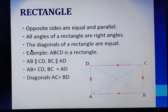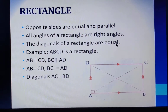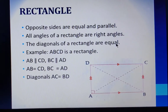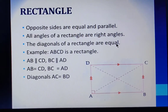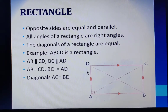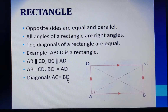The third property of rectangle says the diagonals of a rectangle are equal. We have learned that the lines joining the opposite vertices are the diagonals. So here, AC and BD are the diagonals, and since diagonals of a rectangle are equal, we will have AC equal to BD.